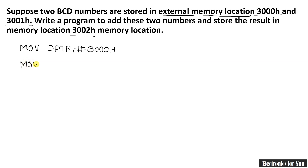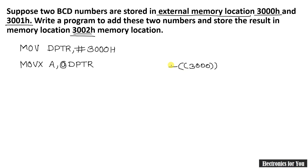Indirect addressing mode is used, so we use the MOVX instruction: MOVX A, @DPTR. This means the content of the address pointed to by DPTR — that is, 3000h — is copied into the accumulator indirectly. So the first number is now loaded into the accumulator.